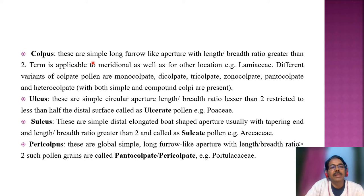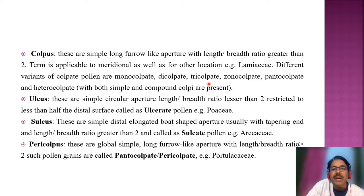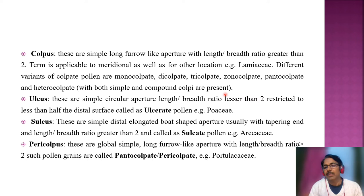The second type is the colpus type — colpus means this is a long furrow-like aperture with length-to-breadth ratio greater than two, meaning they are much longer than broad. The term is applicable to meridional as well as other locations. An example is family Lamiaceae. Different variants of colpate pollen are: monocolpate with a single colpus, dicolpate with two colpi, tricolpate with three, zonocolpate where colpi are present only in the equatorial region, pantocolpate where colpi are present all over the body of the pollen grain, and heterocolpate where both simple and compound colpi are present.